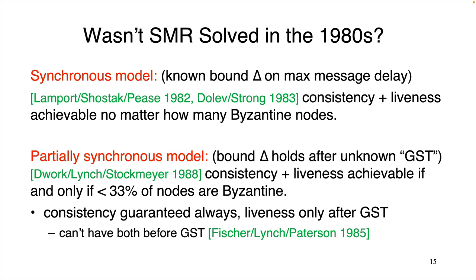To clarify: there's asymmetry in how you get consistency versus liveness. If less than a third of nodes are Byzantine, you get consistency always — whether or not you're under attack. Liveness comes once the network resumes normal operation, after GST. Before GST, you have to give up one of the two, and the usual approach is to keep the safety condition — consistency — always, and achieve liveness eventually after global stabilization time. The takeaway is that really since the 1980s, we've known exactly when you can solve SMR in these two fundamental models.